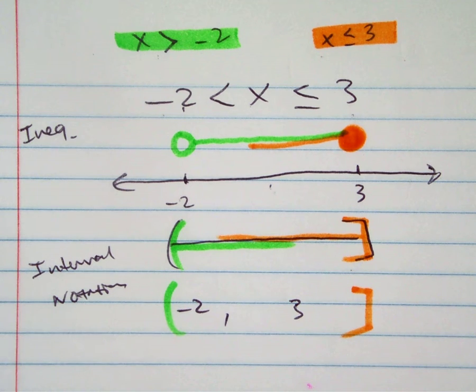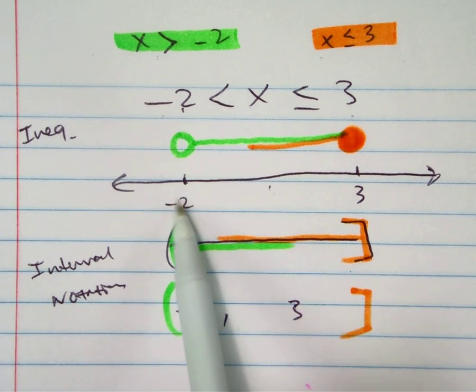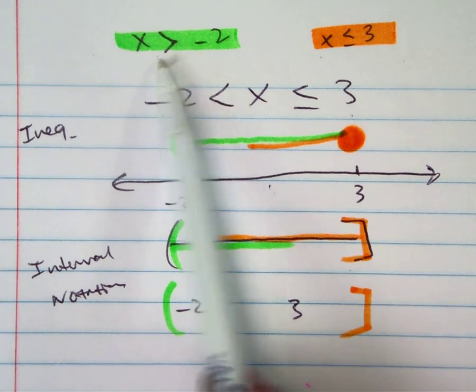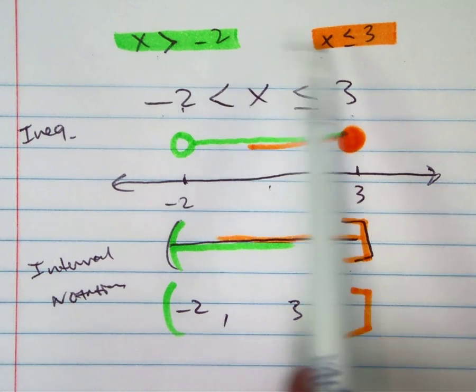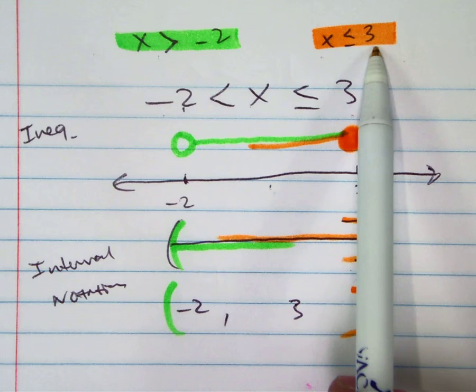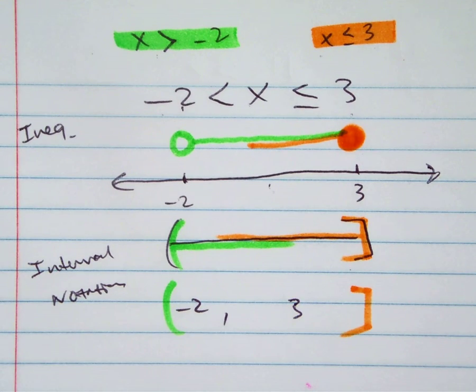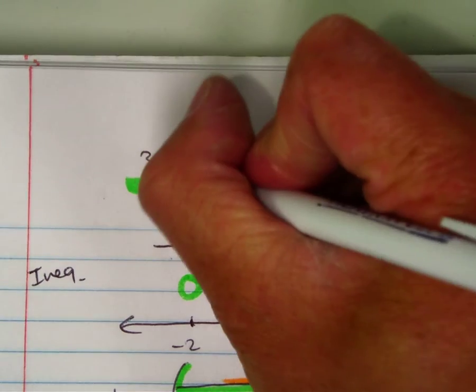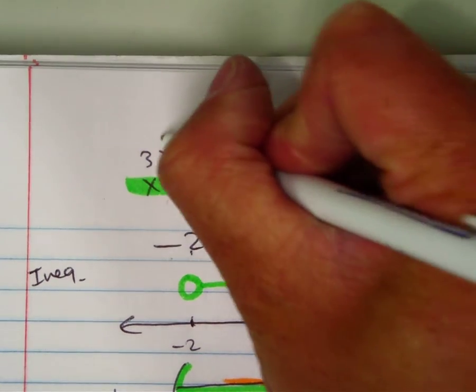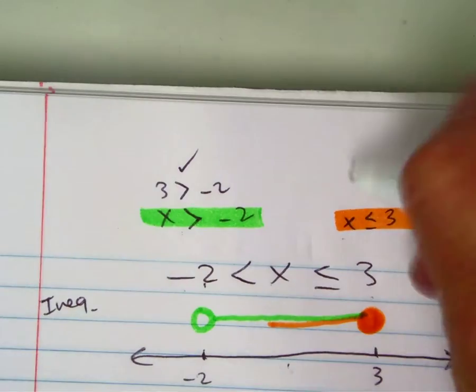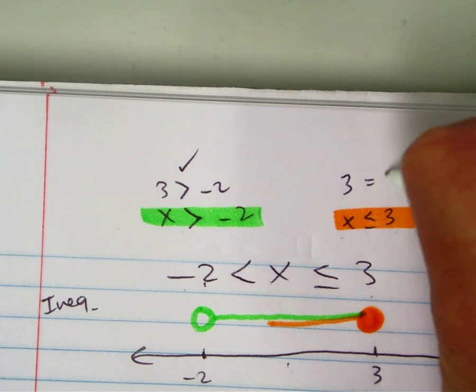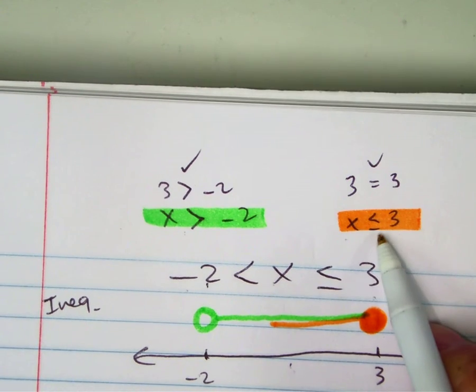How about negative 2? There's negative 2. Negative 2 is not bigger than negative 2. But negative 2 is less than or equal to 3. Remember, I need both of those. How about 3? Look. 3 is greater than negative 2. That works. And 3 is equal to 3. That's what the line there means. So it is a solution.